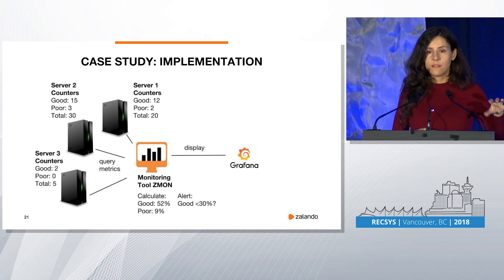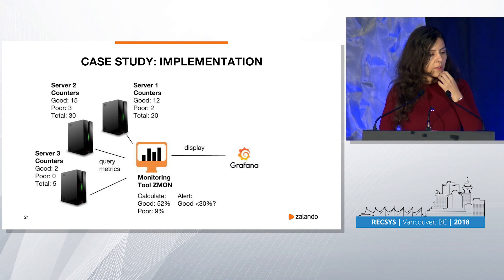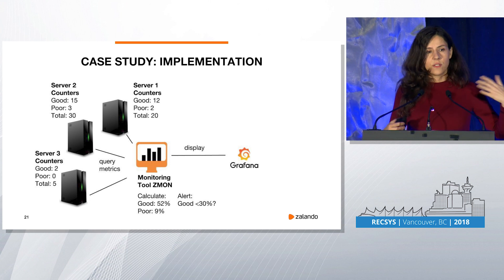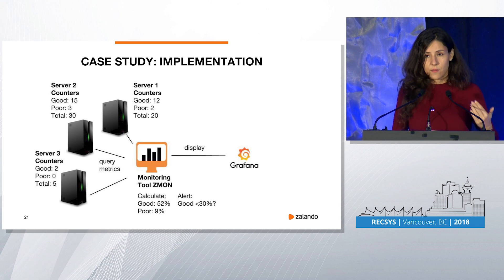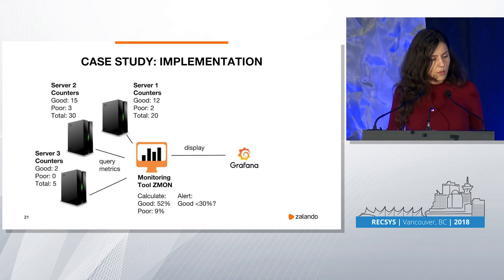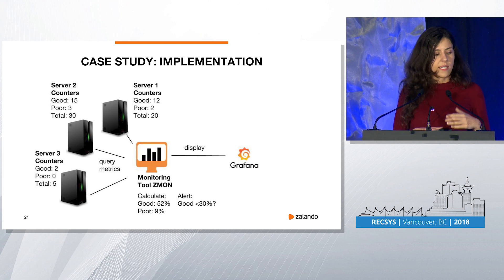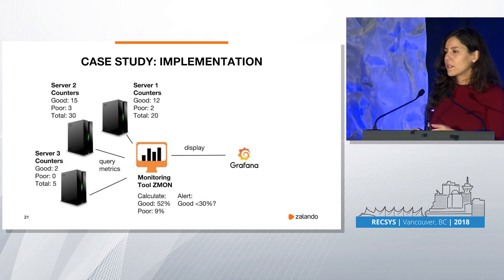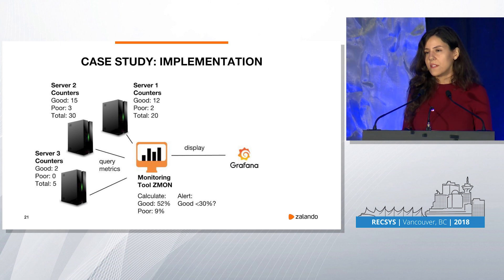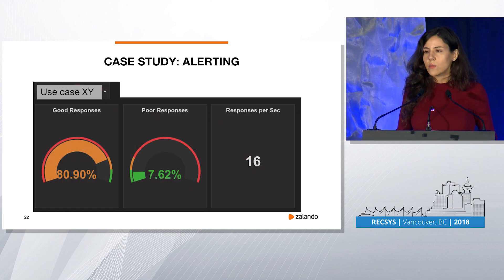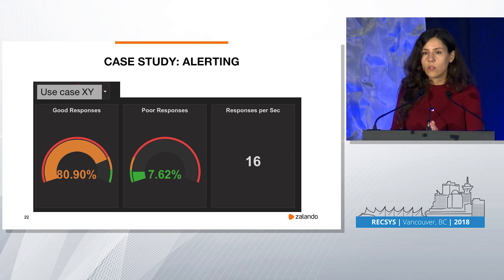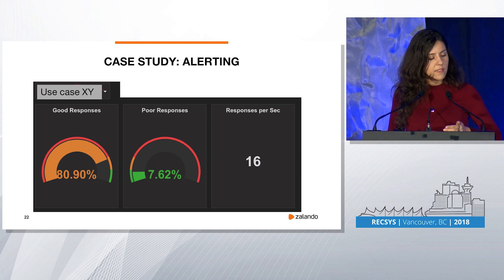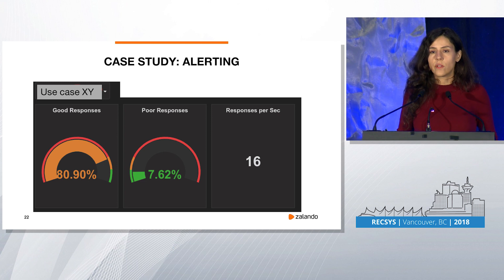So if you have your quality metrics defined — business-case specific, those are ours — you can then do implementation. I wanted to give you a feeling for how difficult it is to integrate such quality metrics, and in our case as well as most of yours it was quite simple. You have a bunch of servers, and on each server when you get the request you have a definition of what you consider good, and you just have counters there. You can take any counters library that just counts up when it's a good response, a poor response, or all responses. There's a monitoring tool — typically available in most companies with multiple servers — that queries all server instances to get metrics. You calculate the percentages across all servers and then do the alerting based on that.